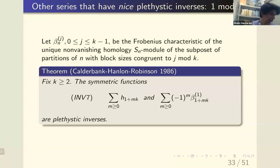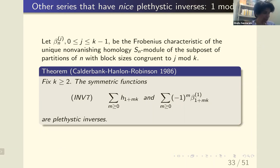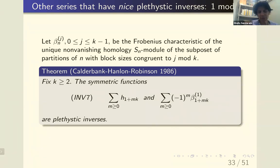Here's another old plethystic inverse result. Where I came into all this was in looking at the partition lattice — the lattice of set partitions. There was a lot of work being done in the late 80s and early 90s on restricted partitions, where you wanted block sizes congruent to 1 mod k. All of these posets were known to be Cohen-Macaulay, and there was a lot of work proving shellability. So there was always the question: when the poset carried an S_n action, what was the action on the homology?